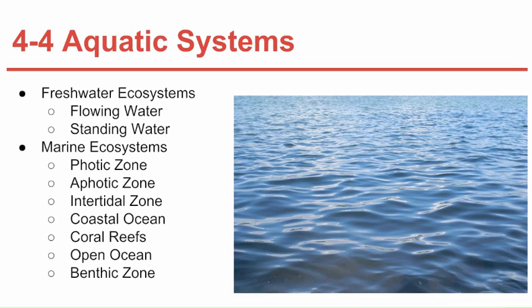Aquatic ecosystems are determined primarily by the depth, flow, temperature, and chemistry of the overlying water. There are two main types of freshwater ecosystems: flowing water and standing water. In flowing water ecosystems, found mainly in rivers, organisms must adapt to the flow and life of moving water.